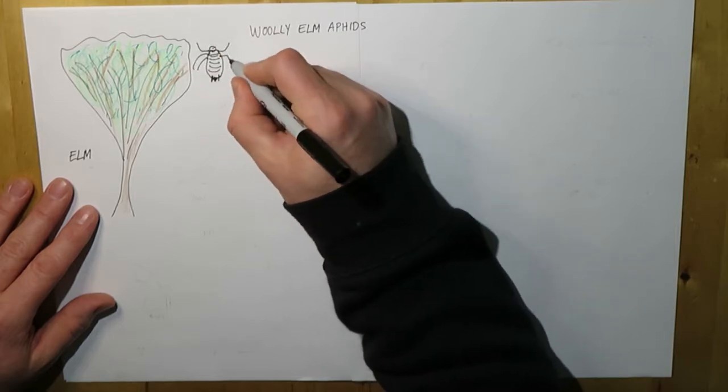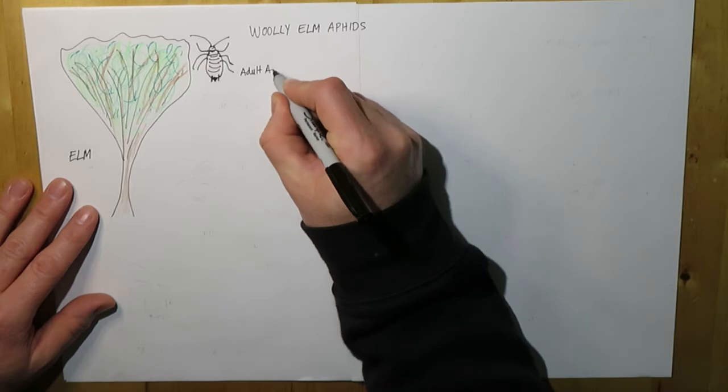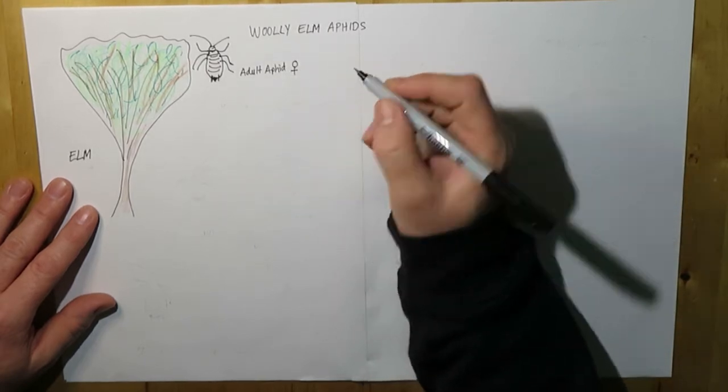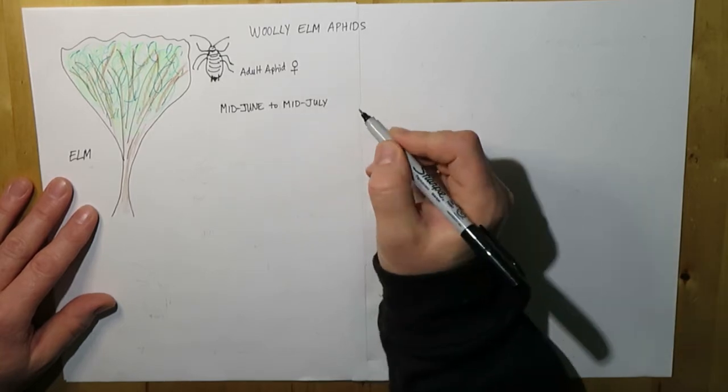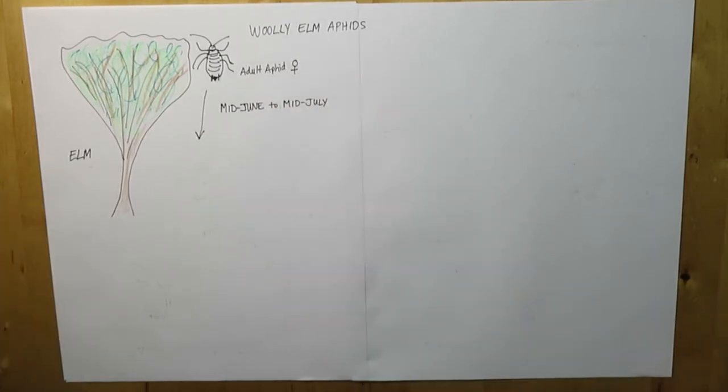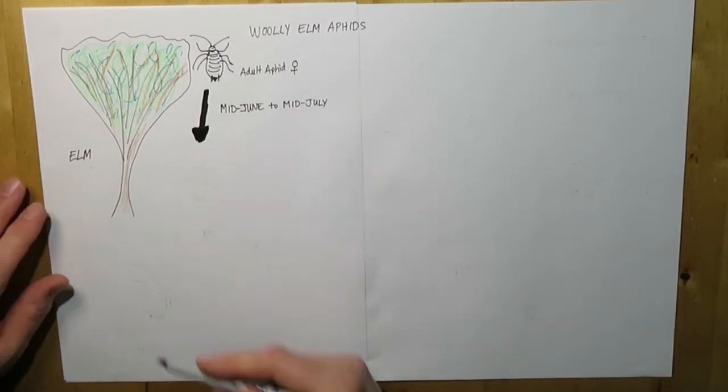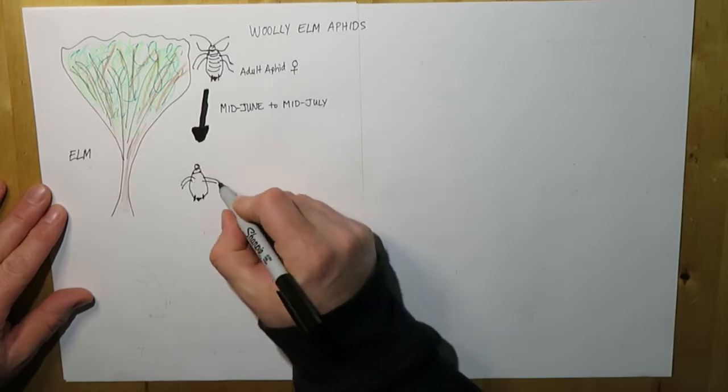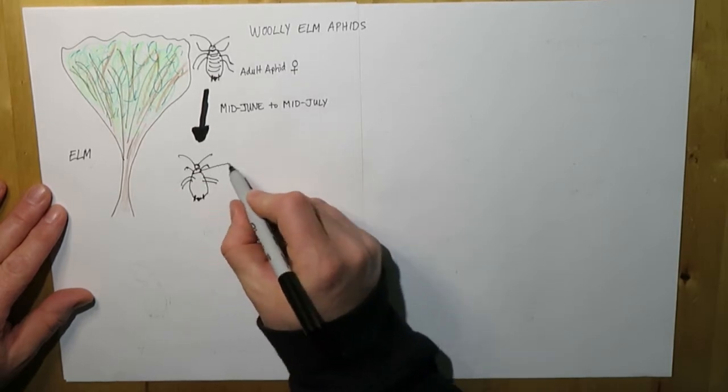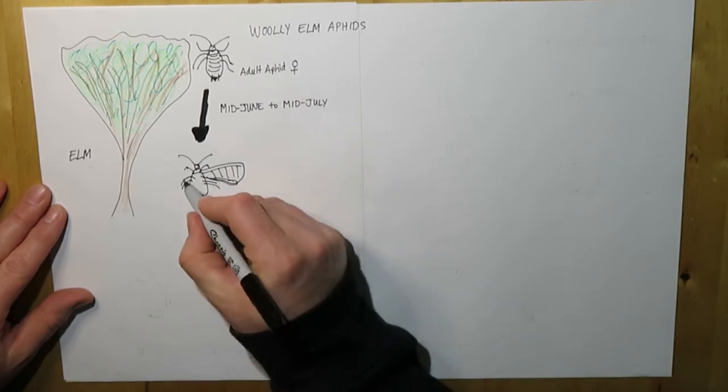So the aphid itself, which is a soft bodied pear-shaped insect, the adult aphids, all female, in about mid-June to mid-July, are wingless and they're sitting on the elms and feeding. You'll have woolly elm aphids on the elm all year, but about mid-July or in the early part of July, they will develop a winged form.